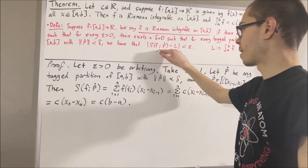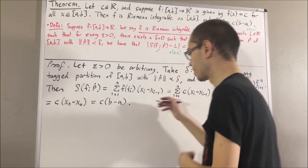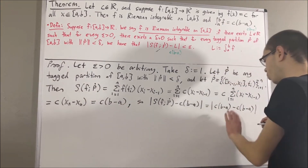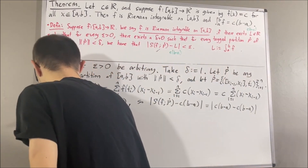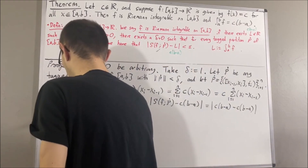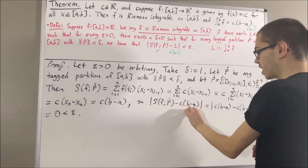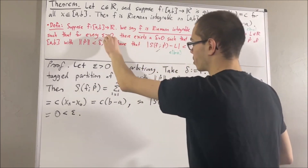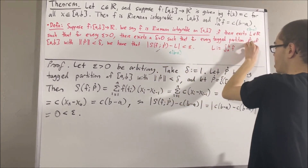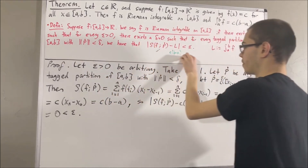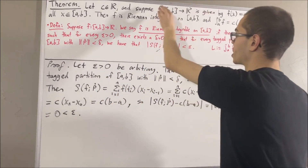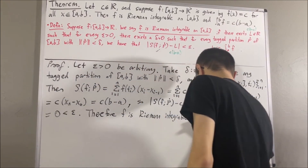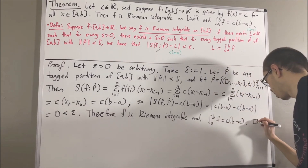So now we can show that the absolute value of the Riemann sum minus c(b − a) is less than ε. Since the Riemann sum itself equals c(b − a), when we subtract them we get 0, and the absolute value of 0 is 0. Since ε > 0, this is less than ε. This shows exactly what we wanted, and so we have proven that for every ε > 0 there exists a δ > 0 such that for every tagged partition of [a, b] whose norm is less than δ, the condition holds. That proves f is Riemann integrable and its integral equals c(b − a), completing the proof.